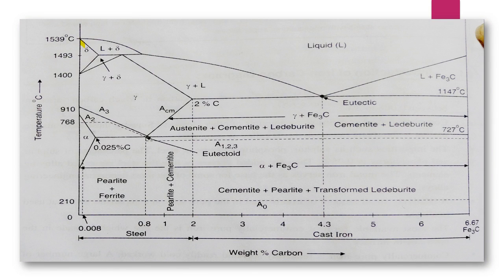This is your Delta ferrite region, existing between 1539°C and 1400°C.